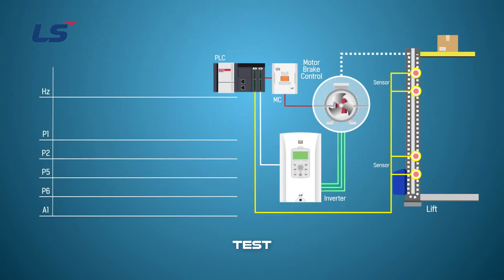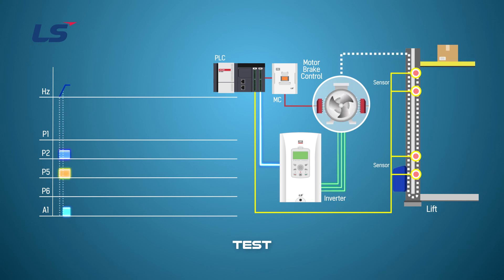Let's take a look at the terminal operation sequence of the IS7. I will drive it slowly to understand the sequence. When the lift operates, you can see that the previously set terminal operates.